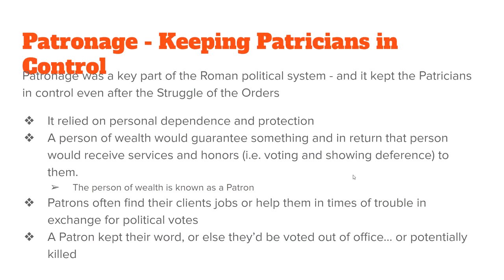There was an event called patronage that kept the Patricians in power. Basically, the Patricians bought their way into power — they offered money and things that Plebeians just couldn't do on their own. This was all about personal dependence and personal protection. Somebody with money would help you out if you needed a lawyer or some sort of service, and you would receive that help in exchange for political votes.